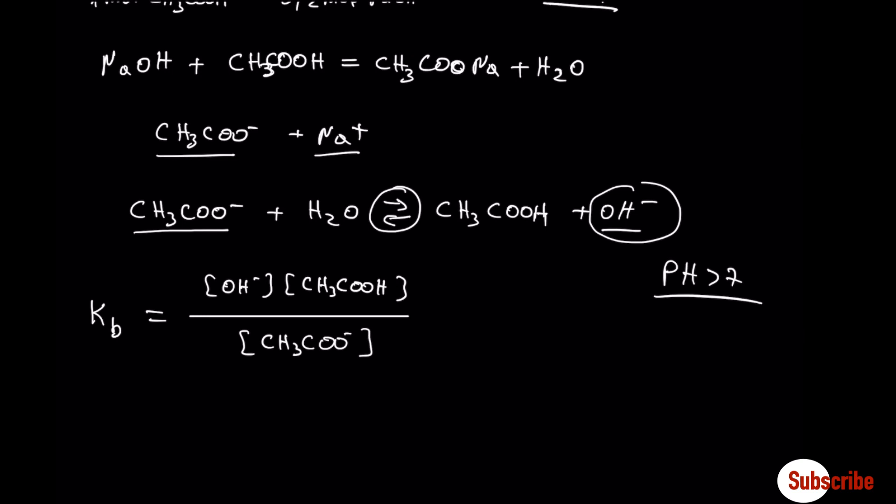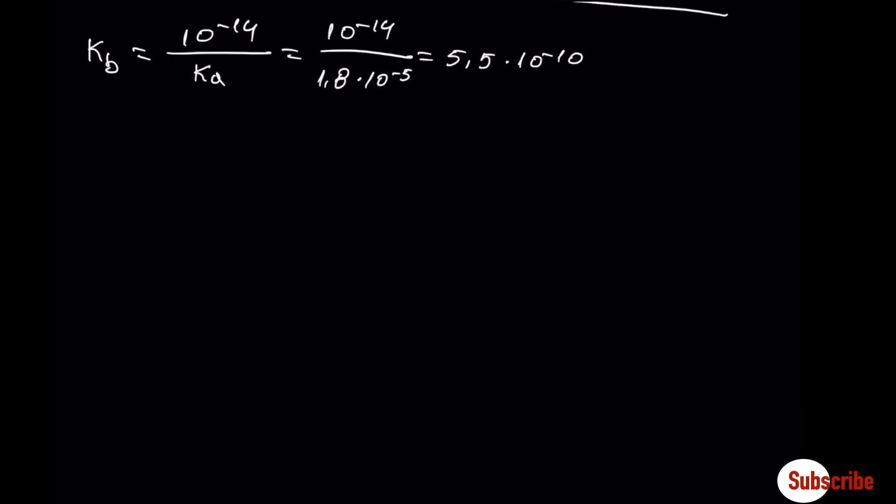In order to find the KB, we have to use the relation Ka multiplied by KB equal to 10 to minus 14. This is only valid for an acid and its conjugate base, its own conjugate base, or a base and its own conjugate acid. In order to find the concentration of OH minus in the solution, which is an equilibrium problem, we have to find first the concentration of the salt.